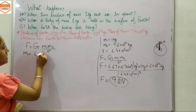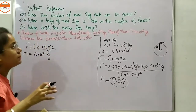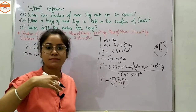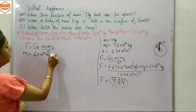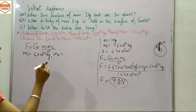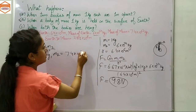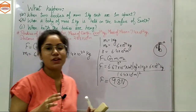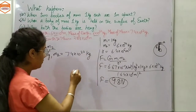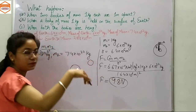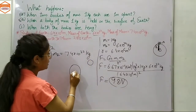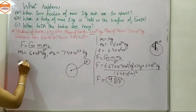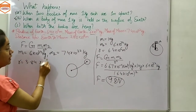The mass of Earth is 6 × 10²⁴ kilograms. Another question this helps answer is: what makes the Moon revolve around Earth? The mass of the Moon is 7.4 × 10²² kilograms. The distance between the centers of Earth and Moon is 3.84 × 10⁸ meters.